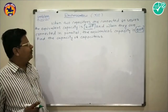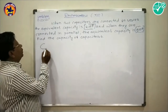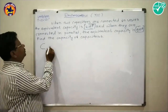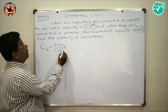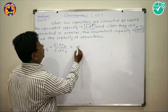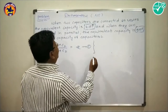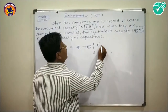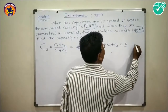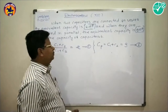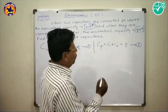Problems on capacitors in series and parallel. In this problem, the equivalent capacitance in series combination is Cs = C1×C2 / (C1+C2) = 2 microfarads (equation 1). When the two capacitors are connected in parallel, Cp = C1 + C2 = 9 microfarads (equation 2).